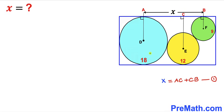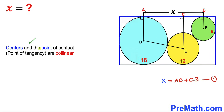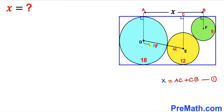In this next step, let's focus on the blue and yellow circles. I've connected their centers D and E. Recall that the centers and the point of tangency are collinear, so all three points lie on the very same line. The radius of the blue circle is 18 and the radius of the yellow circle is 12, so the total distance DE is 18 plus 12, which gives us 30 units.